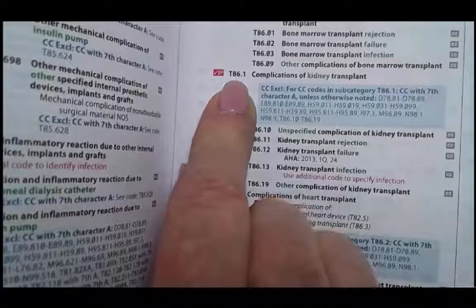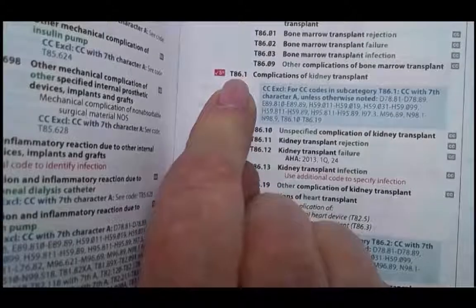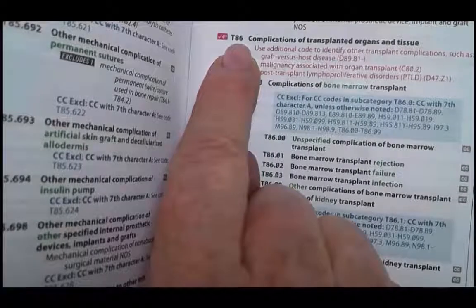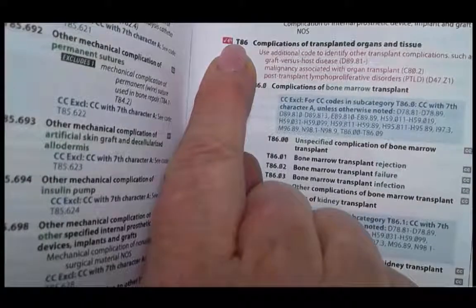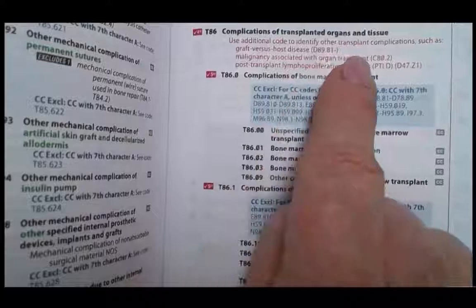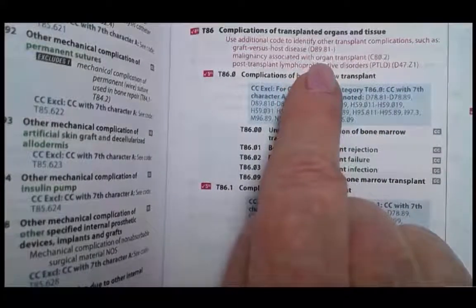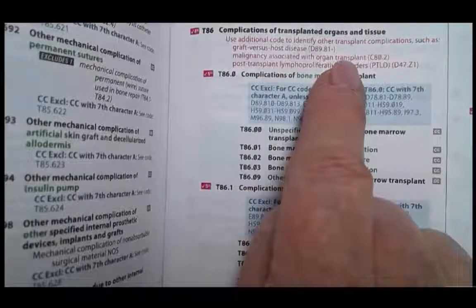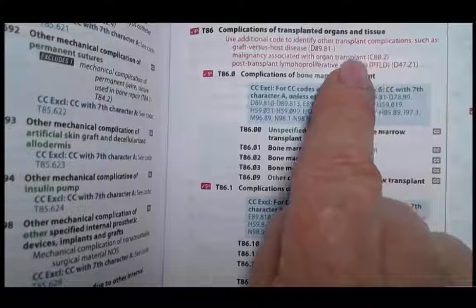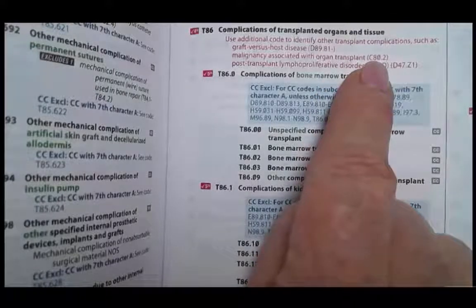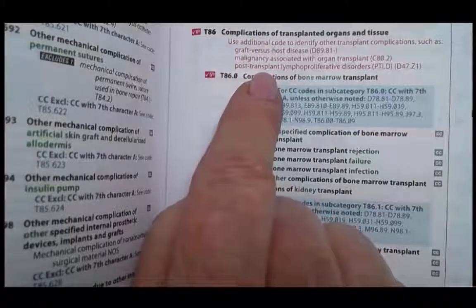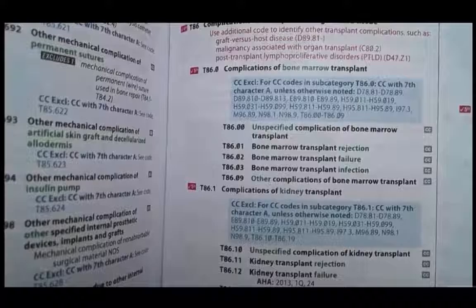One point I wanted to make was to look at the instructional notes with this category. This is why you often want to go not just straight to the code, but back to the beginning of this section. This is called a category code when you have three characters — it's not complete; you need at least a minimum of four characters. In this category, you're going to use additional codes to identify other complications such as graft versus host disease, a malignancy associated with the organ transplant — which is the case we're working on — and C80.2. So not only do our guidelines tell us to use C80.2, but this instructional note also tells us to use C80.2. You're always reading above whatever code you're looking at, up to the category, to see if there are any instructional notes that apply.